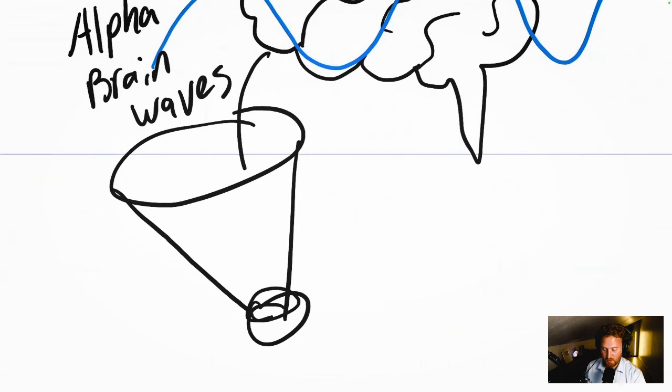Because what it does is filter all the different distractions we experience in life, such as our phones, outside noises, all these different distractions that we can have. And when we're in an alpha brain state,